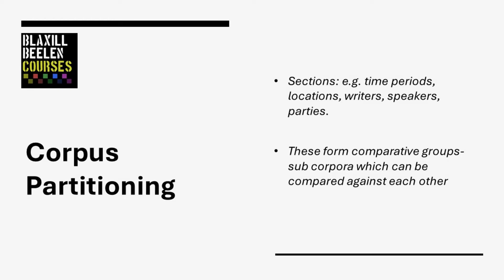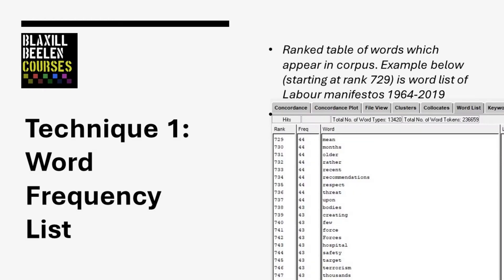What are you trying to compare against what? Once you have established a comparative group, we can move on to actually analysing the corpus with a variety of popular and very simple text mining techniques. The very simplest text mining technique is the humble word frequency list — simply a ranked list of words that appear in a corpus from the most common to the least common. A fairly obvious initial comparison is to compare two word frequency lists.